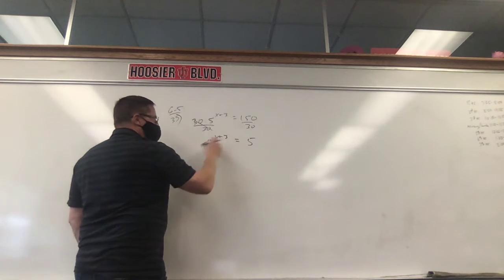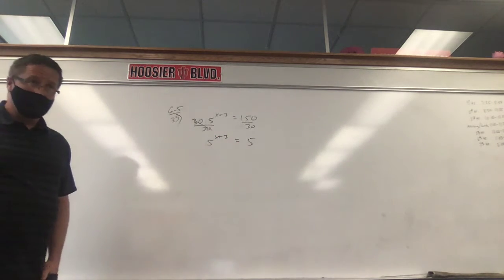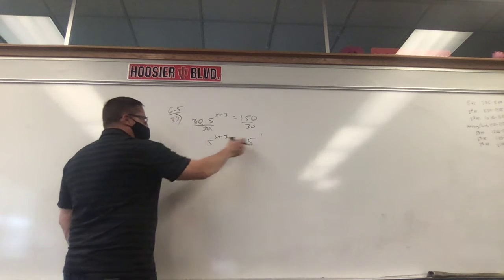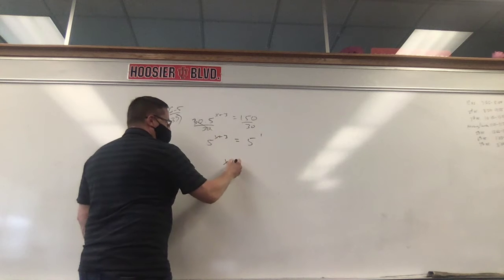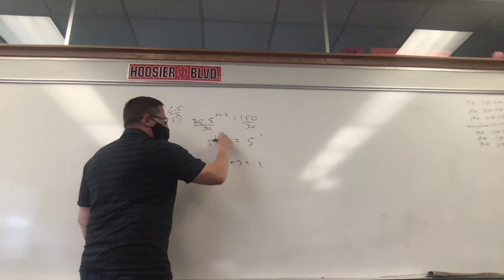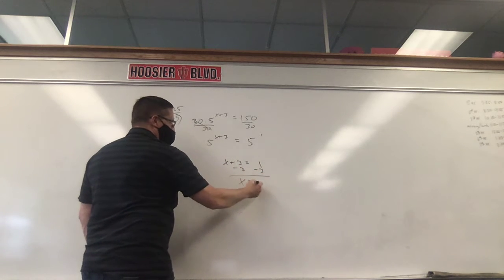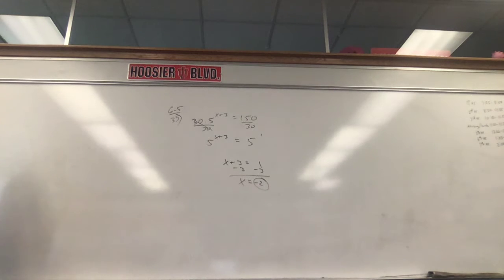Our bases are the same. Now, this one has an exponent of X plus 3. You don't see the exponent here. It's there, though. It's a 1. If you don't see it, it's a 1. So we talked about this yesterday. If the bases are the same, we just ignore them. I'm going to write down X plus 3 equals 1. Set the exponents equal to each other. Then you've got one more step. Subtract 3. X is 1 minus 3, which is negative 2. Hopefully that one's a pretty easy one.